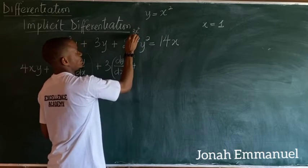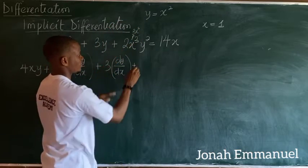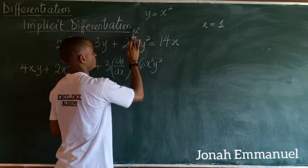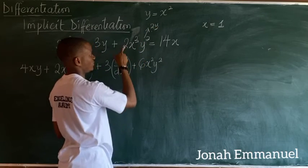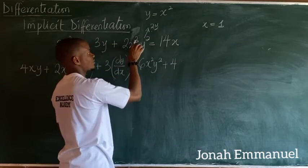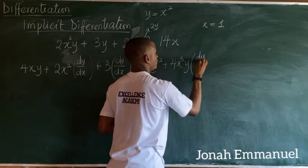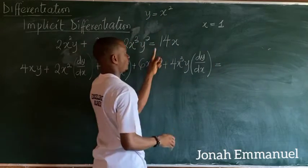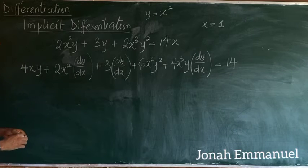Next, differentiating x³y²: differentiating x³ gives 3x², so 2 times 3x² gives 6x²y². Then differentiating y² gives 2y, so 2 times 2 gives 4, yielding 4x³y times dy/dx. For the right-hand side, differentiating 14x gives 14.